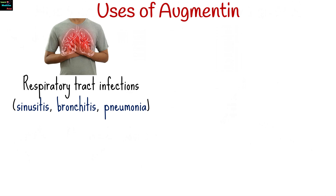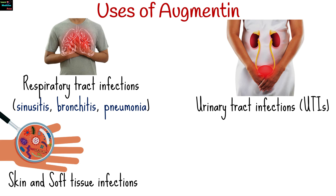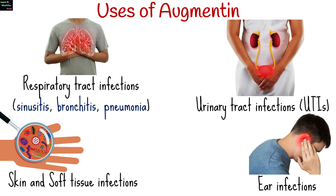Augmentin is prescribed for various bacterial infections, including respiratory tract infections such as sinusitis, bronchitis and pneumonia, urinary tract infections, skin and soft tissue infections, ear infections, and certain types of bacterial diarrhea.